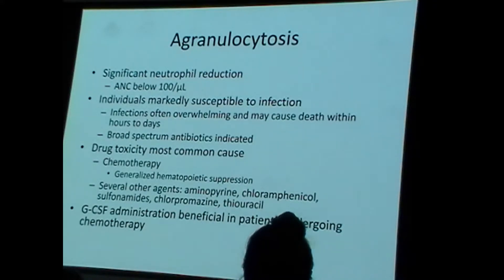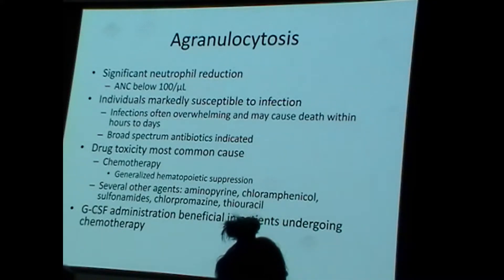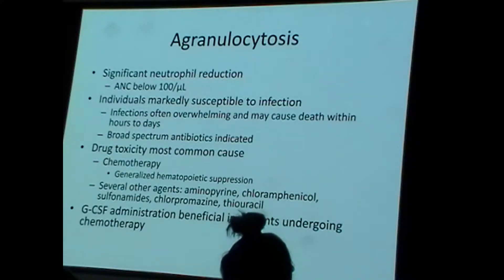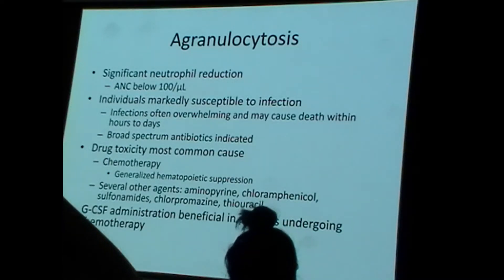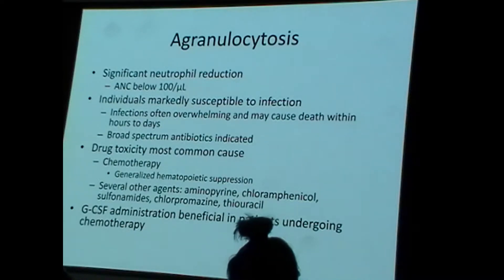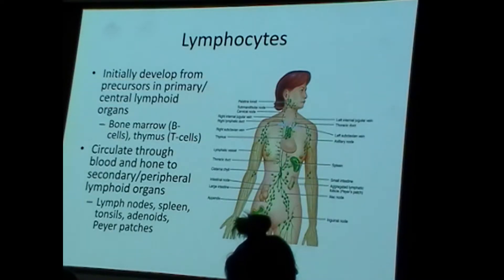The most common cause of agranulocytosis is chemotherapy — it is what we do from a healthcare standpoint to try and cure our patients of disease. There are other medications that can result in agranulocytosis as well. Practically, we bombard individuals with chemotherapy and radiation therapy, often beyond sort of the point of no return. At the same time, we give them G-CSF to stimulate reproduction of white blood cells, after having bombarded the bone marrow to rid it of malignant cells.